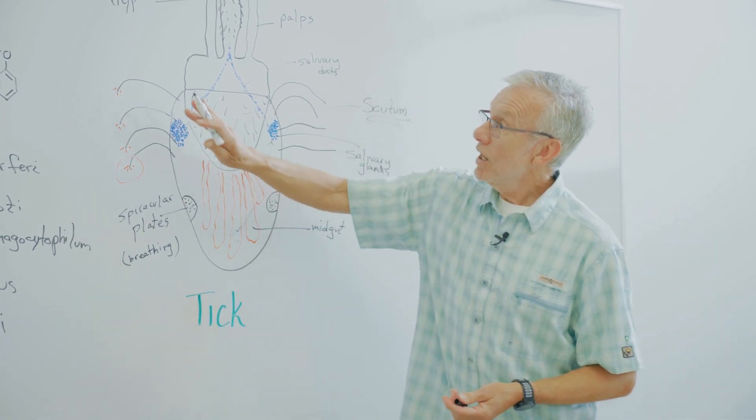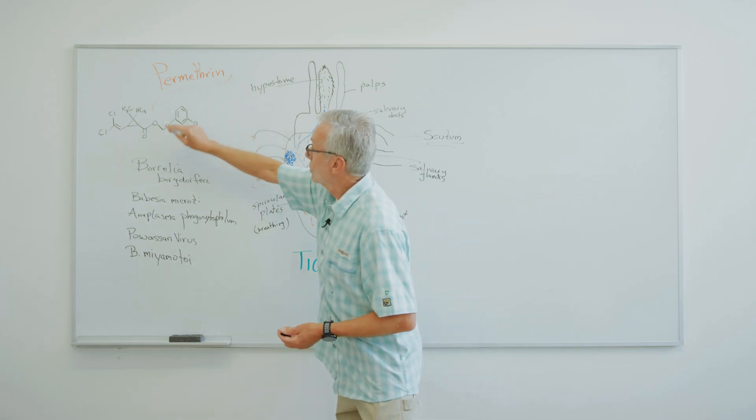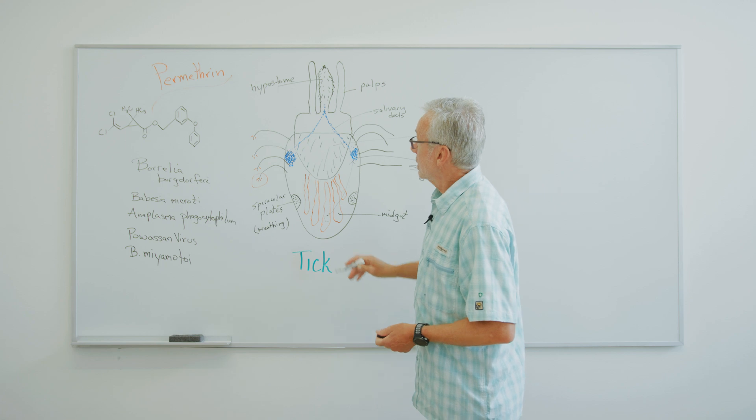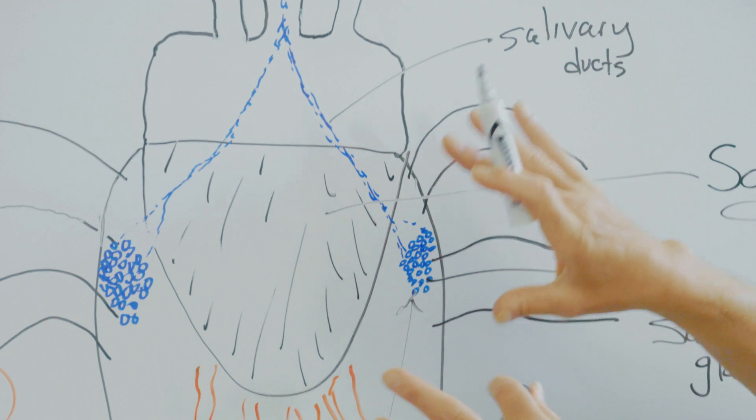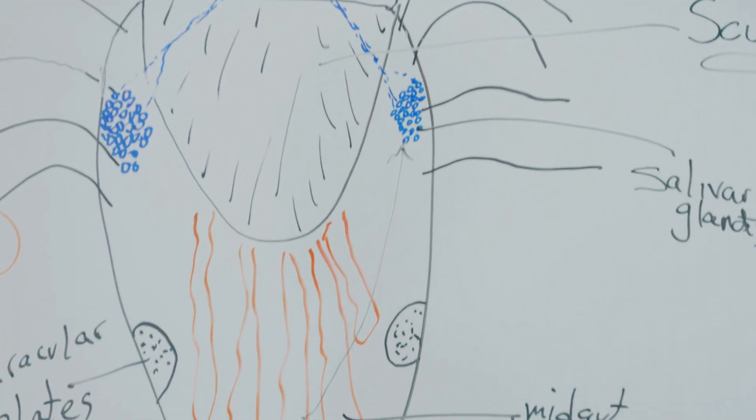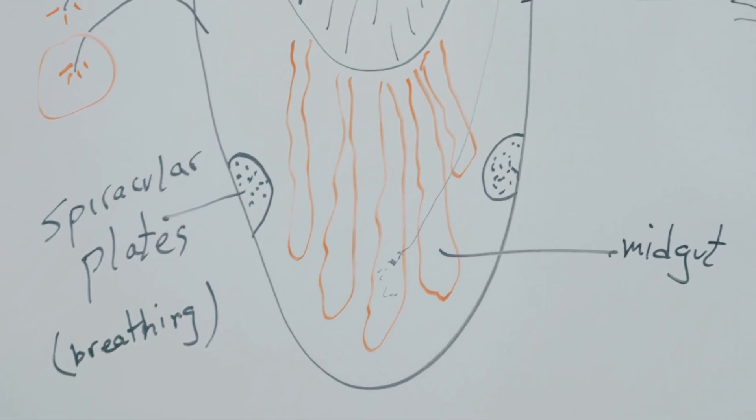And so somehow the molecule of permethrin, shown here, actually goes through the tick's legs and into the rest of its body, and it affects the nervous system in some miraculous way.